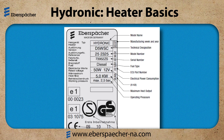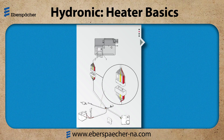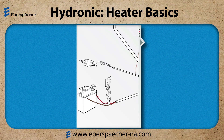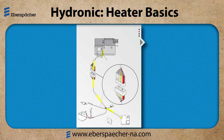We have identified the heater. Now let's identify the system. If I look at the wire harness, red is power and brown is ground. We prefer these connections directly at the battery, protected with an inline fuse. Once my heater receives a start signal, this will power the yellow wire to the heater. The voltage should be equal on the red wire and the yellow wire.